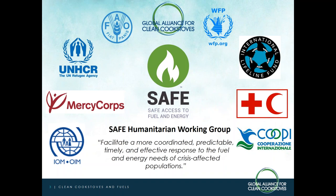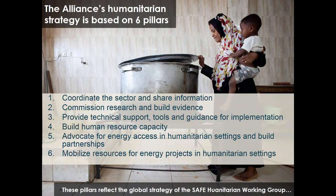A large part of our humanitarian portfolio is dedicated to co-leadership of the Safe Humanitarian Working Group, whose mission is to facilitate a more coordinated, predictable, timely and effective response to the fuel and energy needs of crisis-affected populations. The working group is currently co-chaired by the Alliance and the Food and Agricultural Organization and the World Food Program, with a steering committee that includes all major organizations, especially highlighting UNHCR. The Alliance's work is based around six humanitarian pillars — coordinating the sector and sharing information on energy access in humanitarian settings.